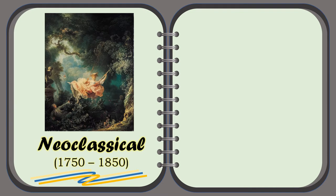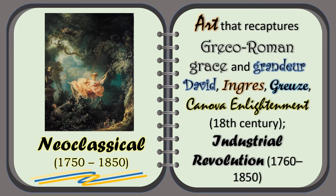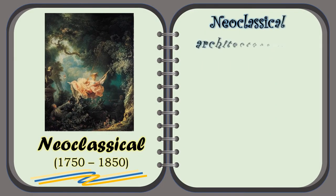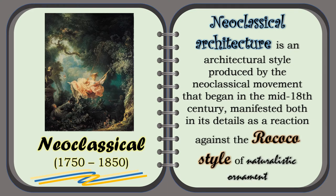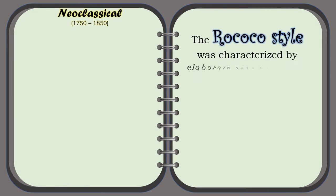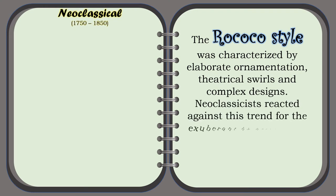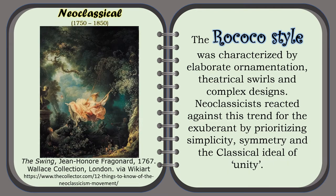The Neo-Classical Period. Art that recaptures Greco-Roman grace and grandeur — David, Ingres, Greuze, Canova — emerged during the Enlightenment and the Industrial Revolution. Neo-Classical Architecture is an architectural style produced by the Neo-Classical Movement that began in the mid-18th century, manifested both in its details as a reaction against the Rococo style of naturalistic ornament. The Rococo style was characterized by elaborate ornamentation, theatrical swirls, and complex designs. Neo-classicists reacted against this trend, prioritizing simplicity, symmetry, and the classical ideal of unity. For example, The Swing, painted by Jean-Honoré Fragonard in 1767.